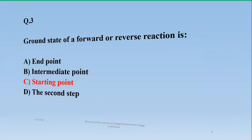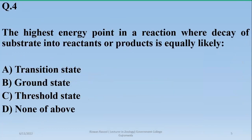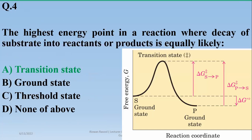Number four: the highest energy point in a reaction where decay of substrate into reactant or product is equally likely is termed the transition state. This is the highest energy point in an enzymatic reaction, and the enzyme's product or substrate concentrations can also be equal.